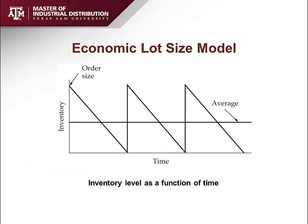The Economic Order Quantity (EOQ) model is one of the important models in inventory theory and is the foundation of many other models. It has a few important assumptions. First, the demand rate is fixed — every minute or every day we see the same demand amount. Second, whenever we place an order, that order arrives immediately — the lead time is zero, or instantaneous supply. Third, whenever we place an order we pay a certain fixed amount that is independent of the order size, so whether ordering one or one million items, we pay the same amount.